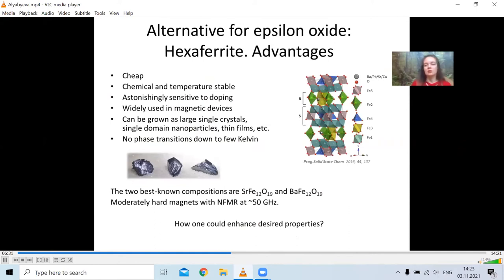Hexagonal ferrite is widely used on the magnetic market. And two best known representatives are strontium hexagonal ferrite and barium hexagonal ferrite. They are moderate hard magnets with coercive force of about 6 kOe and with the frequency of natural ferromagnetic resonance in the region of 40 to 50 GHz.